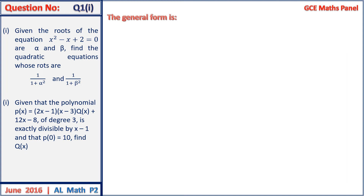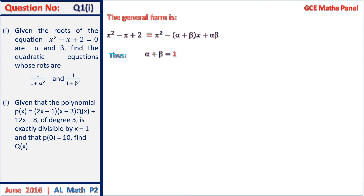The general form of a quadratic is given by x squared minus sum of roots plus products. Making this expression identical to the general form, we obtain x squared minus x plus 2 identical to x squared minus sum of roots plus products, where the roots are alpha and beta. From this identity, the sum of roots equals 1 and the product of roots equals 2.